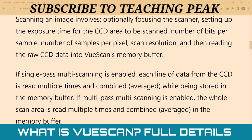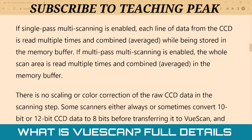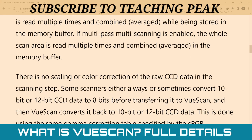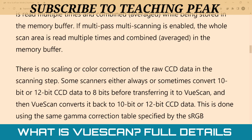If single-pass multi-scanning is enabled, each line of data from the CCD is read multiple times and combined while being stored in the memory buffer. If multi-pass multi-scanning is enabled, the whole scan area is read multiple times and averaged in the memory buffer. There is no scaling or color correction of the raw CCD data at this stage.